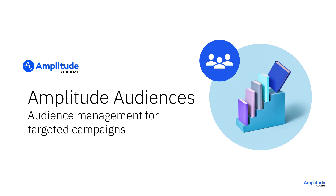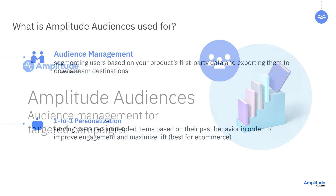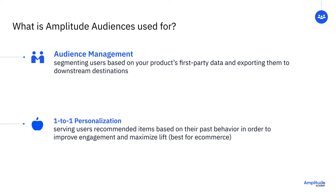Amplitude Audiences helps translate customer insights into action by giving you the tools to create behavior-based audiences and activate them in downstream destinations, as well as the means to personalize each experience for maximum engagement. There are two broad categories of use cases that Audiences helps address: audience management and one-to-one personalization. Audience management covers building behavioral cohorts, or audiences, based on the insights you uncover in Amplitude Analytics with your product's first-party user data.